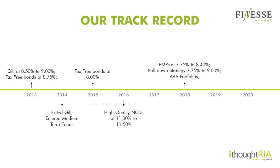Then in 2018, we looked at fixed maturity plans, which are the mutual fund version of a fixed deposit. We locked into these funds at YTMs of 7.75 to 8.4%. We took advantage of the NBFC crisis when yields went up. We also looked at the open-ended version of fixed maturity plans, which are roll down or target maturity funds, where the yields ranged between 7.75 to 9%. Our sole focus through this entire period of distress was to look at pure AAA portfolios and apply certain other quality filters as well, because just the credit rating is not the best measure.